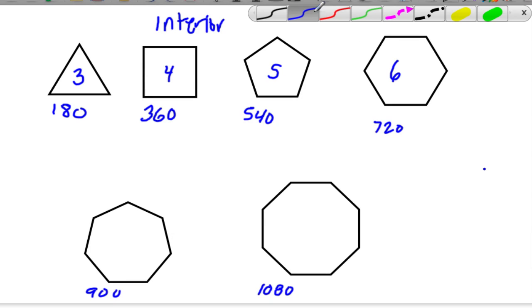With interior angles, what we're looking at are the angles that are inside a polygon. So a triangle has three interior angles, and we need to know that it doesn't matter what the triangle looks like, the three angles add up exactly to 180 degrees.